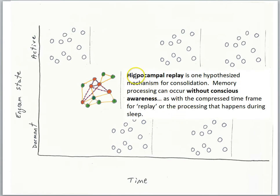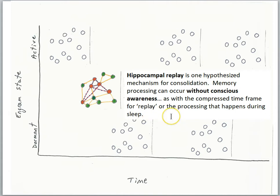In previous lessons, we've learned about hippocampal replay, which is hypothesized to be one of the mechanisms for consolidation. Memory processing can occur without conscious awareness. The hippocampal replay is often very compressed in time and may not reach our conscious awareness — it might be happening right after we learn something. It also includes processing that happens during sleep, when we are not conscious in slow-wave sleep. Consolidation processes can happen outside of our awareness, whether due to compressed signaling time or during an unconscious stage of sleep.